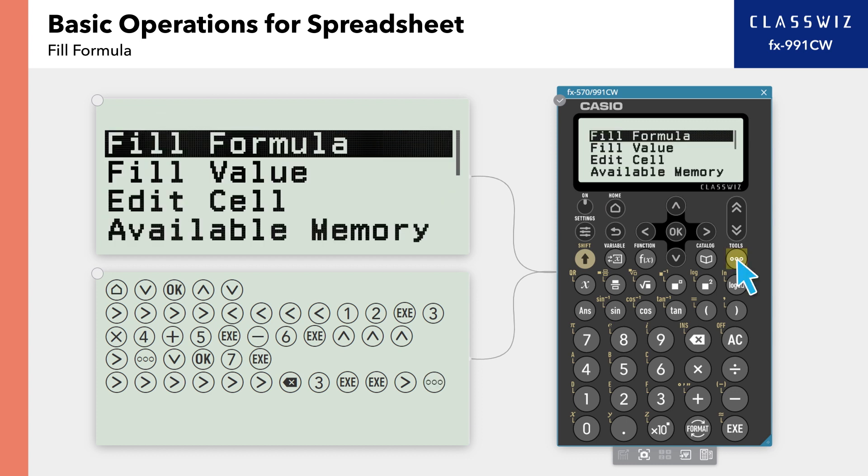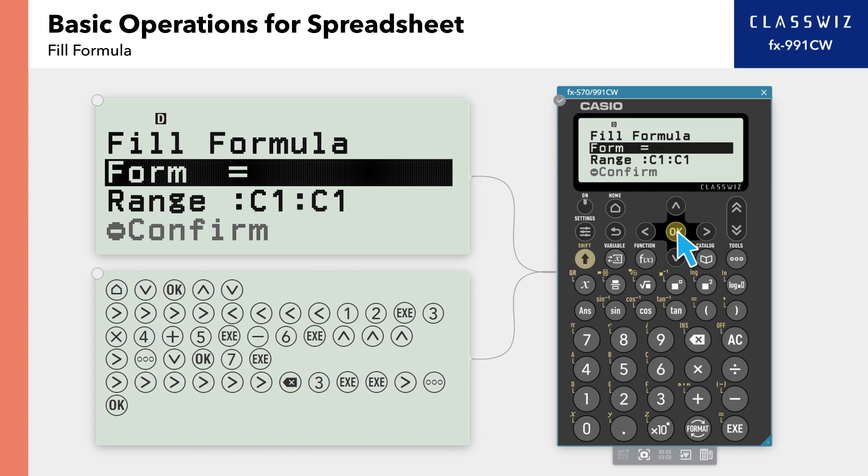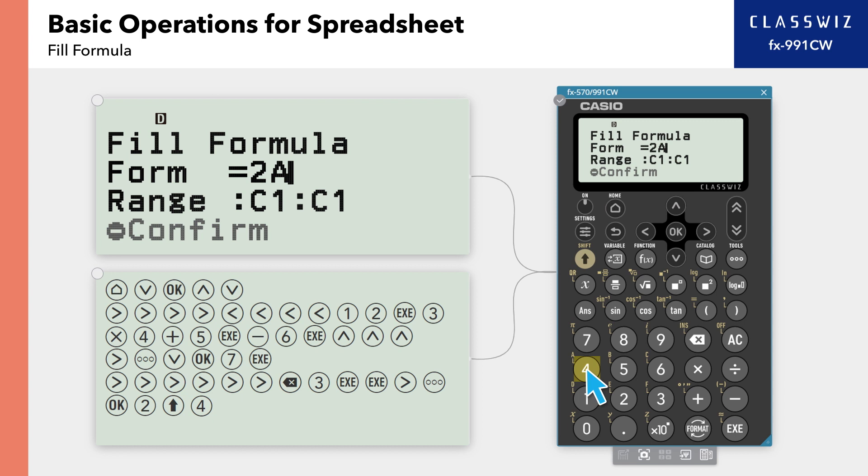Press Tools, then select Fill Formula. For Form, input the formula 2 times A1 plus B1.